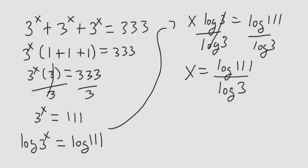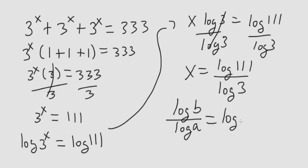Now you can leave it this way and use a calculator to get the final value. Or you can use the change of base rule, which says that log of b over log of a is equal to log base a of b. So this would be x is equal to log base 3 of 111.